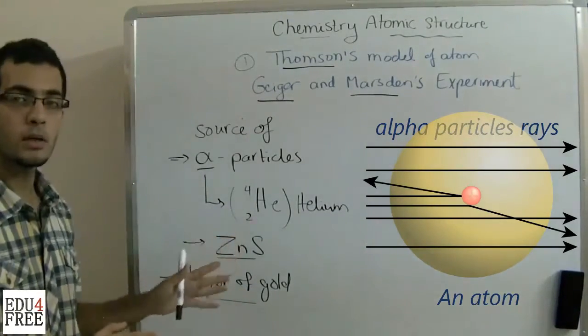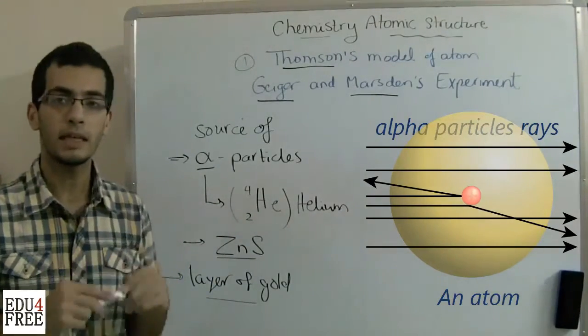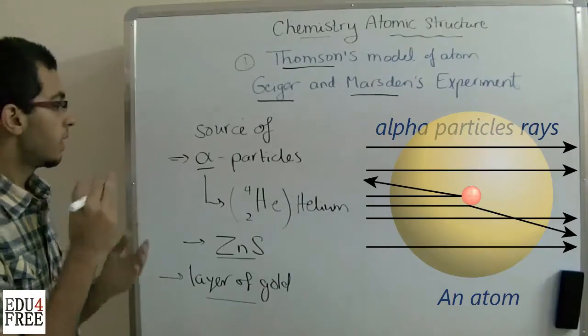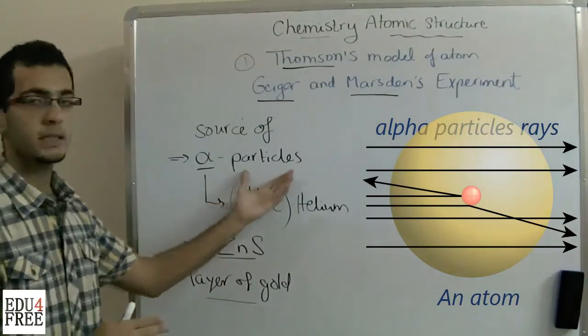And other alpha particles were reflected. This means that they hit a very dense object that didn't allow the alpha particles to pass through.